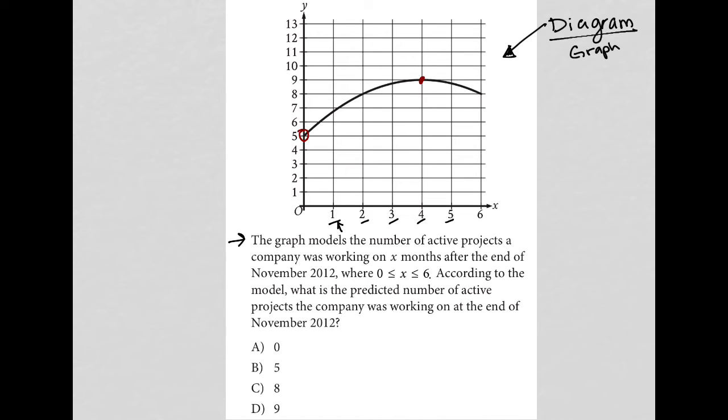For instance, the number 1 would represent the end of December 2012. Number 2 would represent the end of January 2013, so on and so forth. Where x, the number of months, is between 0 and 6. So we just have 6 months total.